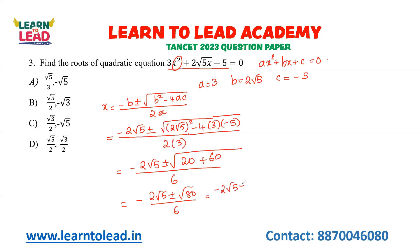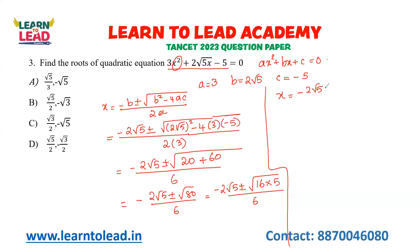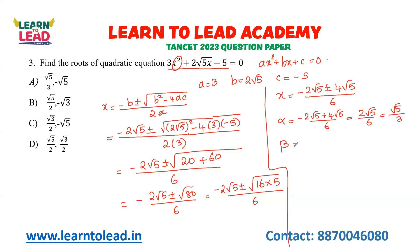We can write 80 as 16 into 5, so root 80 equals 4 root 5. Therefore x equals minus 2 root 5 plus or minus 4 root 5, divided by 6. Alpha is obtained as minus 2 root 5 plus 4 root 5 divided by 6, which equals 2 root 5 by 6, giving root 5 by 3. Beta is minus 2 root 5 minus 4 root 5 divided by 6, giving minus root 5. So the answers are root 5 by 3 and minus root 5.